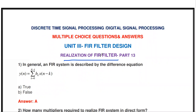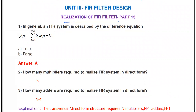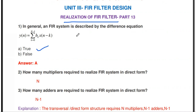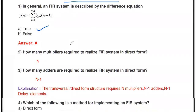The first question: in general, an FIR system is described by the difference equation y(n) = summation k=0 to N-1 of b_k * x(n-k). The statement is true. The FIR system has a finite number of impulse responses. In the discrete FIR system, y(n) is the output, x(n) is the input, x(n-k) is the previous inputs, and b_k is the filter coefficient.